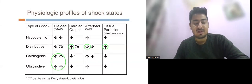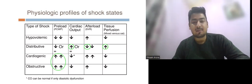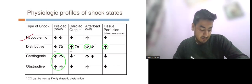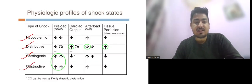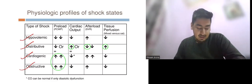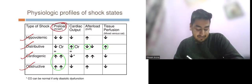The first table is on different types of shocks. We have hypovolemic, distributive, cardiogenic, and obstructive shocks. Let us discuss the physiological changes in these different types of shocks. First is preload.